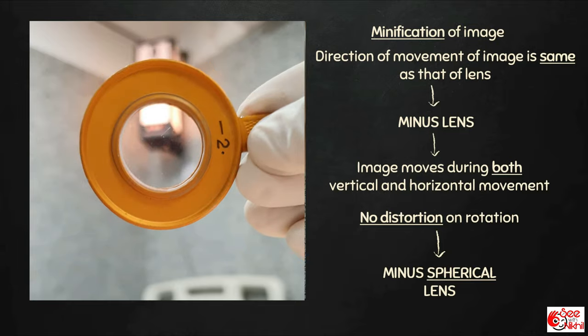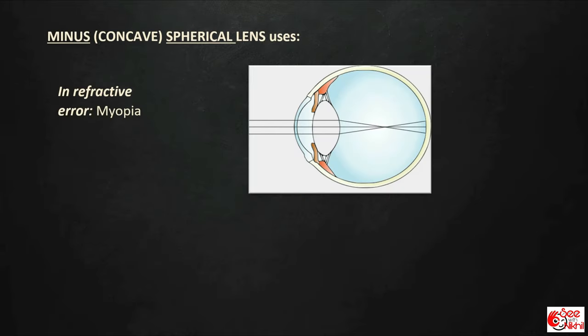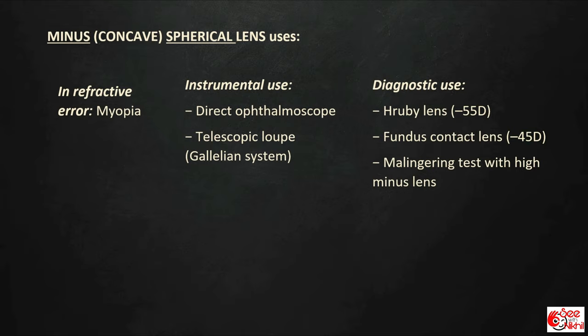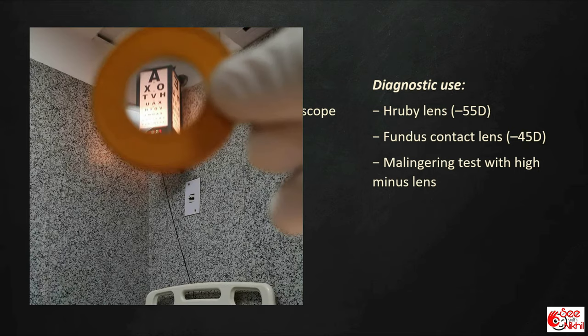A minus sphere is used in correction of myopia, where light rays coming from infinity are focused in front of the retina. A minus sphere will help focus these rays over the retina. Direct ophthalmoscopes have both plus and minus spherical lenses, as already discussed. Ruby lens and fundus contact lenses are also minus spherical lenses.